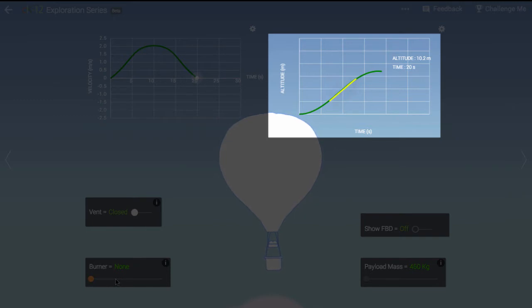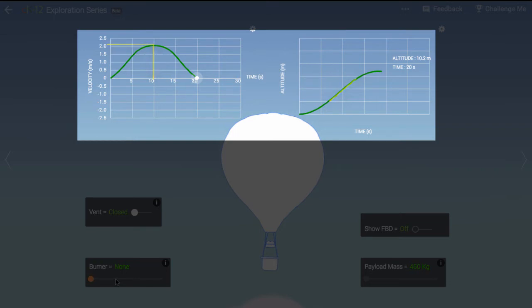The slope of this position versus time graph is equal to the speed of the balloon. Notice that the slope starts out fairly flat and is greatest at 10 seconds when the velocity is greatest. Then the slope begins to decrease again to zero. This represents the balloon slowing to a stop.